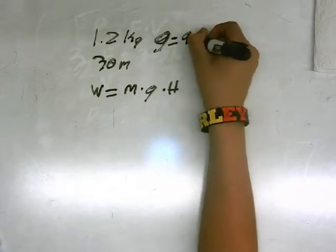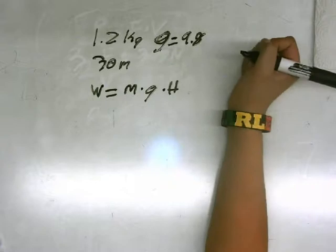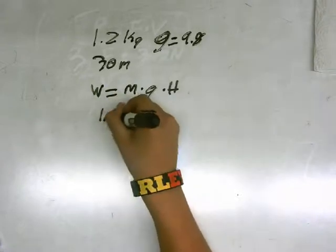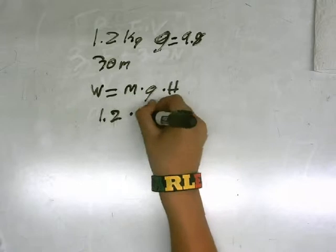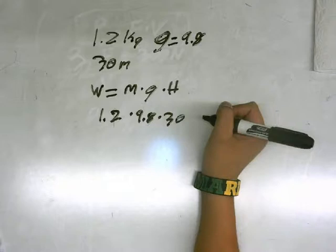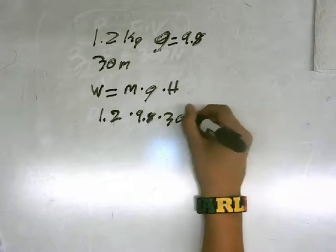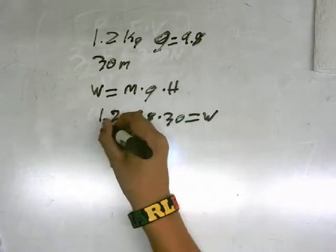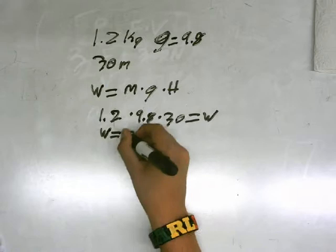So all we have to do is plug all these in. 1.2 times 9.8 times 30 equals work. Work equals 352.8.